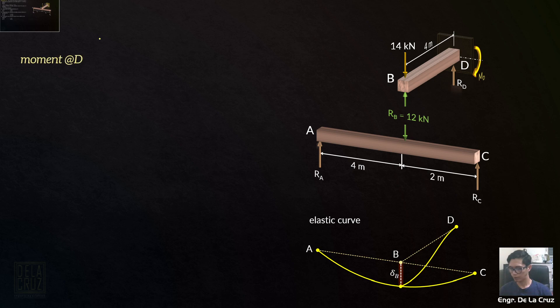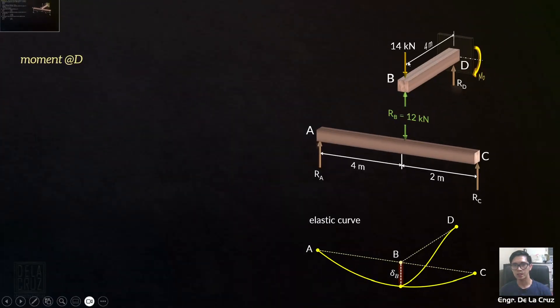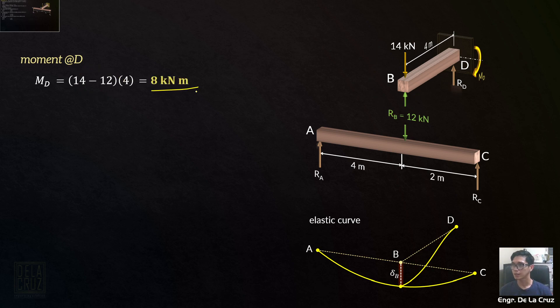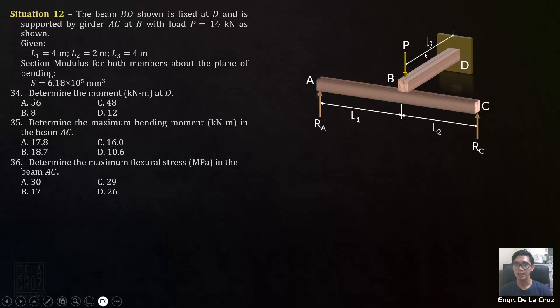If you have Rb, let me put it here. The moment at D for number 34 question, determine the moment at D. The moment at D is just equals 14 downward minus 12, moment arm is 4. Net force at the free end. So you have 8 kilonewton meter. So that is letter B. Again, 14 times L3 is wrong. Most of the students did that.